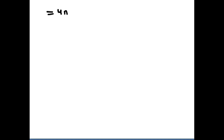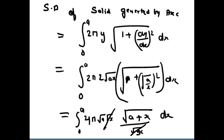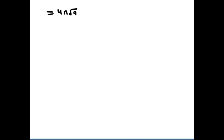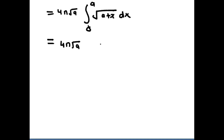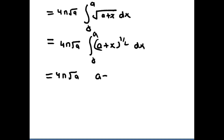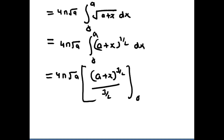This becomes 4π√a ∫₀ᵃ √(a + x) dx, which equals 4π√a · [(a + x)^(3/2) / (3/2)] from 0 to a. Simplifying: 4π√a · (2/3) · [(a + x)^(3/2)] from 0 to a.